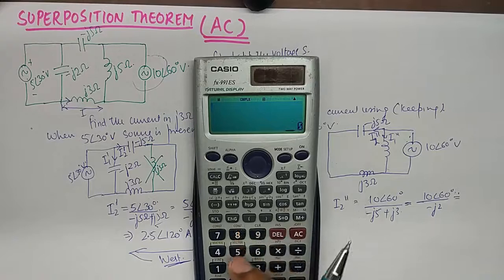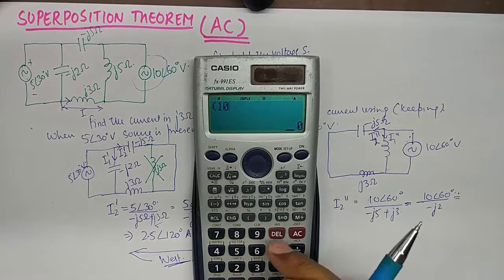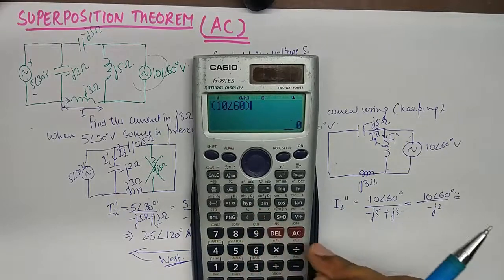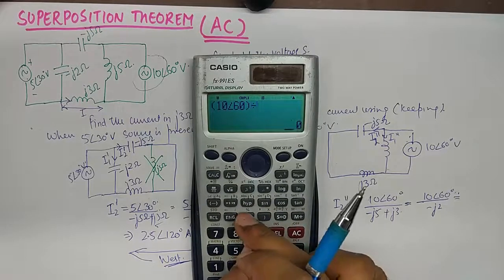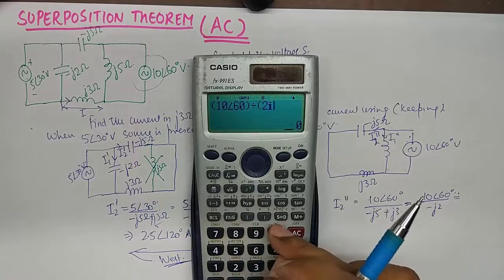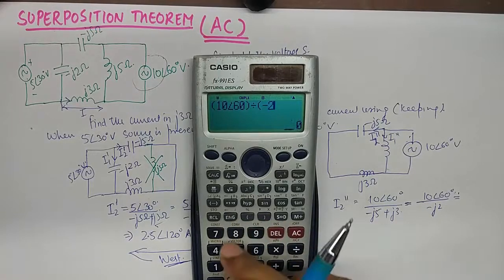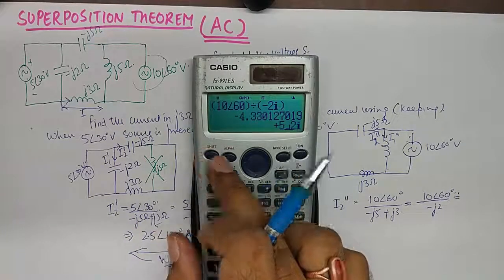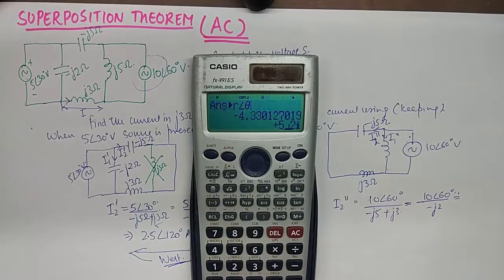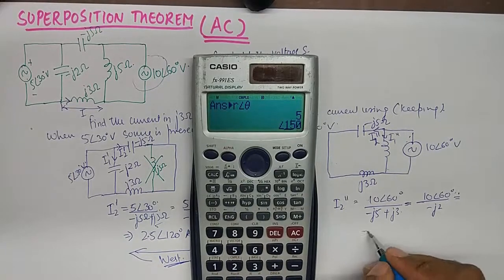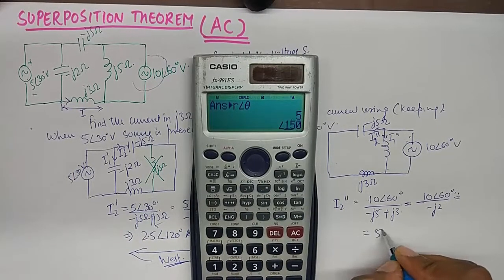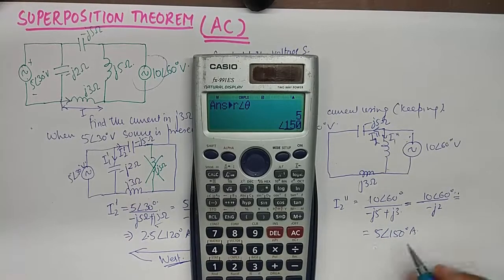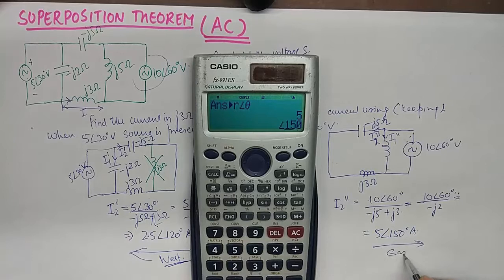And I get, oh I erased it accidentally. So this is the value, but I would need this value in polar form. So I'll say 5 angle 150 degrees and this will go in the east direction.